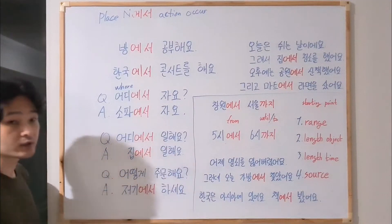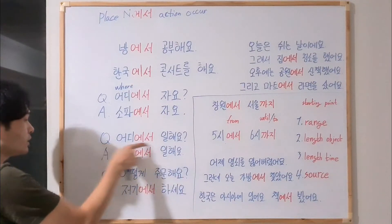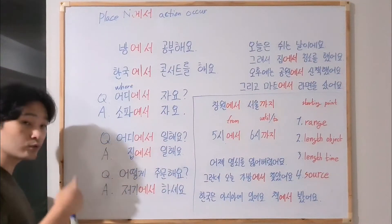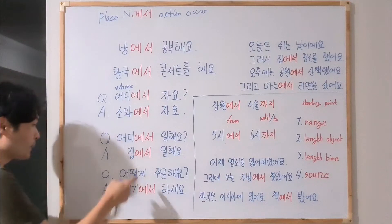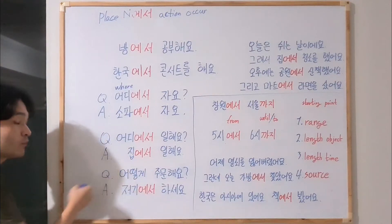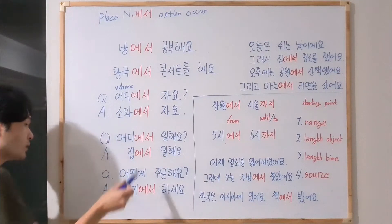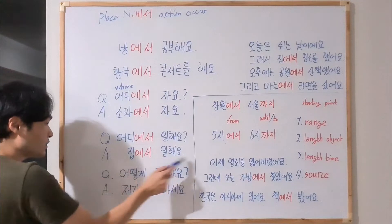일해요 means 'to work.' 어디에서 일해요? — Where do you work? Answer: 집 — I'm working at home. 집에서 일해요.